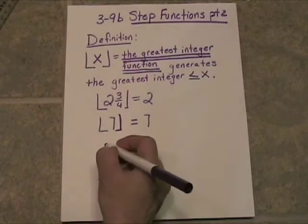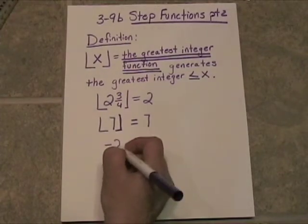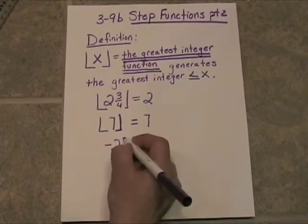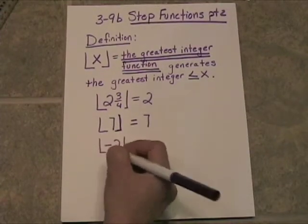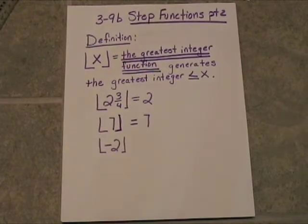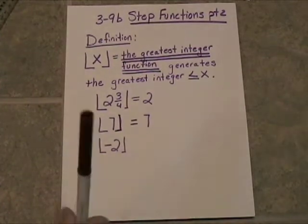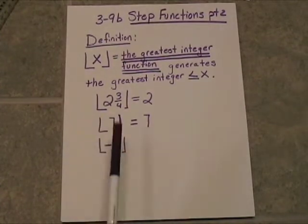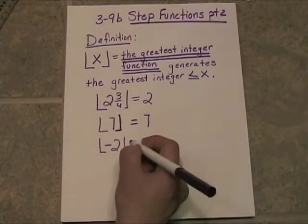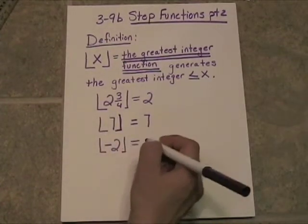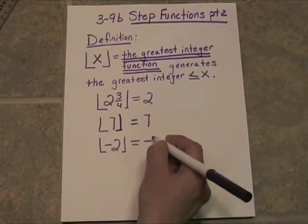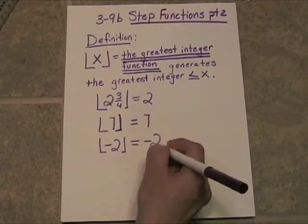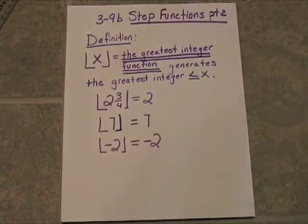Let's try a negative: negative 2. The greatest integer function of negative 2 — that's an integer already. So the greatest integer of negative 2 would be negative 2.